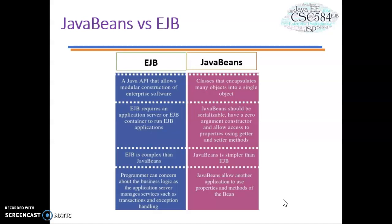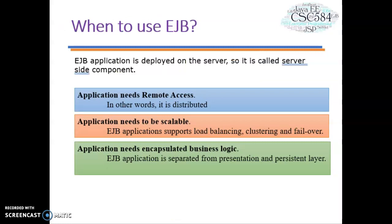Java Bean allows another application to use properties and methods of the bean. Now let's look at when to use EJB. When one uses EJB, the application becomes multi-tiered because presentation and business logic are separated. For large applications, one can rely on services like security, transaction, and persistence provided by the application server, so the developer only needs to concentrate on the implementation of business logic. For example, if you are building a web service accessed primarily by Java clients, EJB will help you build your application faster by automatically handling lower-level details such as load balancing, clustering, and failover.